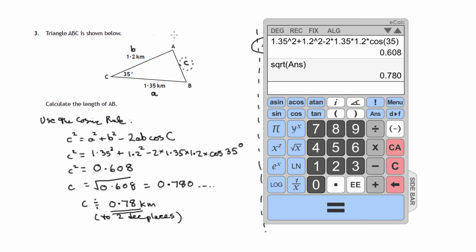And look also at your diagram and say, well, is that a reasonable answer? When this is just over 1, this is just over 1, this should be under 1, which 0.78 is - three quarters, fine. Roughly 1, roughly 1, three quarters, that seems okay for this diagram. If you'd ended up with 78, you would have known that there was something wrong in your calculation. So c is approximately 0.78 kilometres to two decimal places.